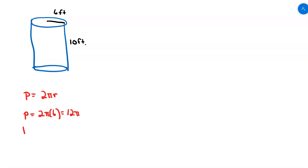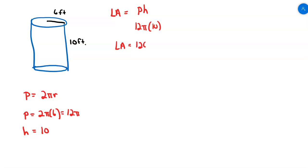That's the perimeter of my base. The height of my object is 10. The lateral area is the perimeter of the base times the height, so 12 pi times 10 gives a lateral area of 120 pi square feet. That's an exact value.